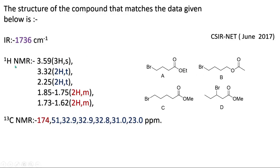Now, how to look at the NMR data and predict which is the correct structure? If you look at the 13C NMR, there is 174 ppm, which is typically for an ester group — both options have that. And 51 ppm is nothing but a carbon attached to a heteroatom. Both compounds also have sp3 hybridized carbon atoms.